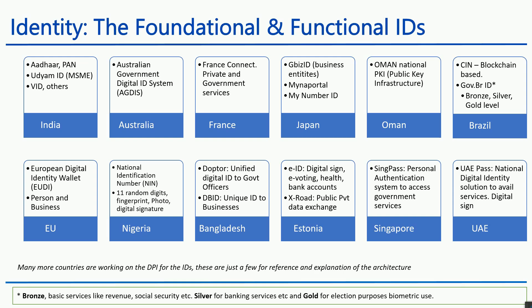Estonia has an eID which can be used for digitally signing documents, e-voting, healthcare, bank accounts, and all other services. It also has a multi-layered approach similar to Brazil's bronze, silver, and gold system, which we will discuss in the next video. Estonia also has a very good system called X-Road, a public-private data exchange platform for how data can be exchanged between different entities.